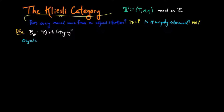Its objects are the same as the category E, and a morphism in the Kleisli category F from X to X' is the same as an E morphism F from X to TX. Since the morphism is denoted by the same letter F, we will use the arrow with a line down the middle to indicate a morphism in the Kleisli category.